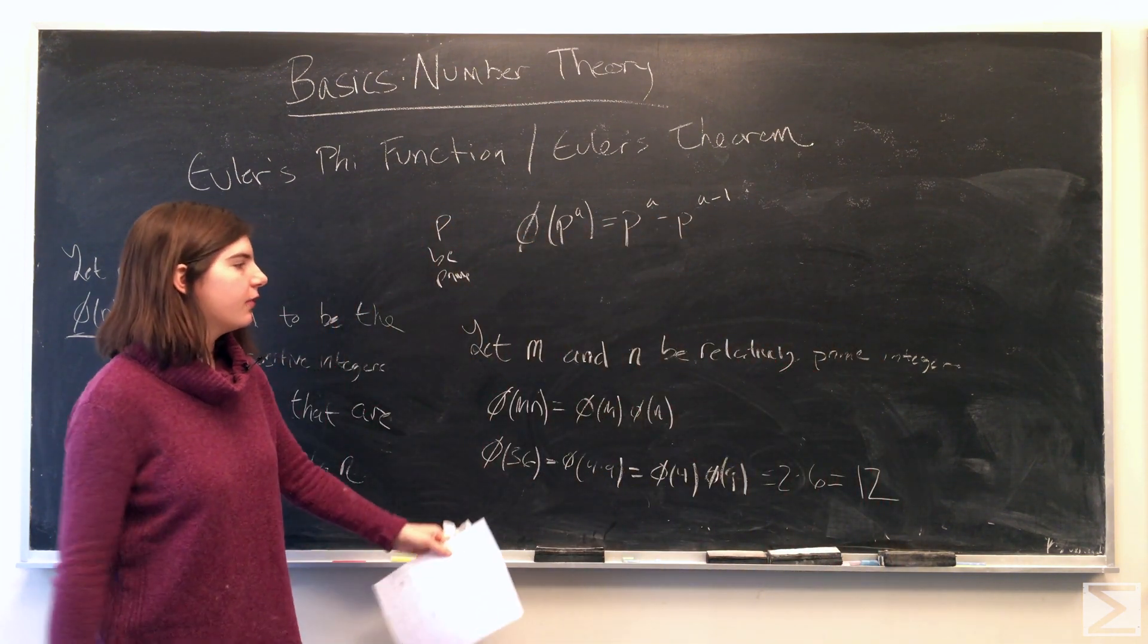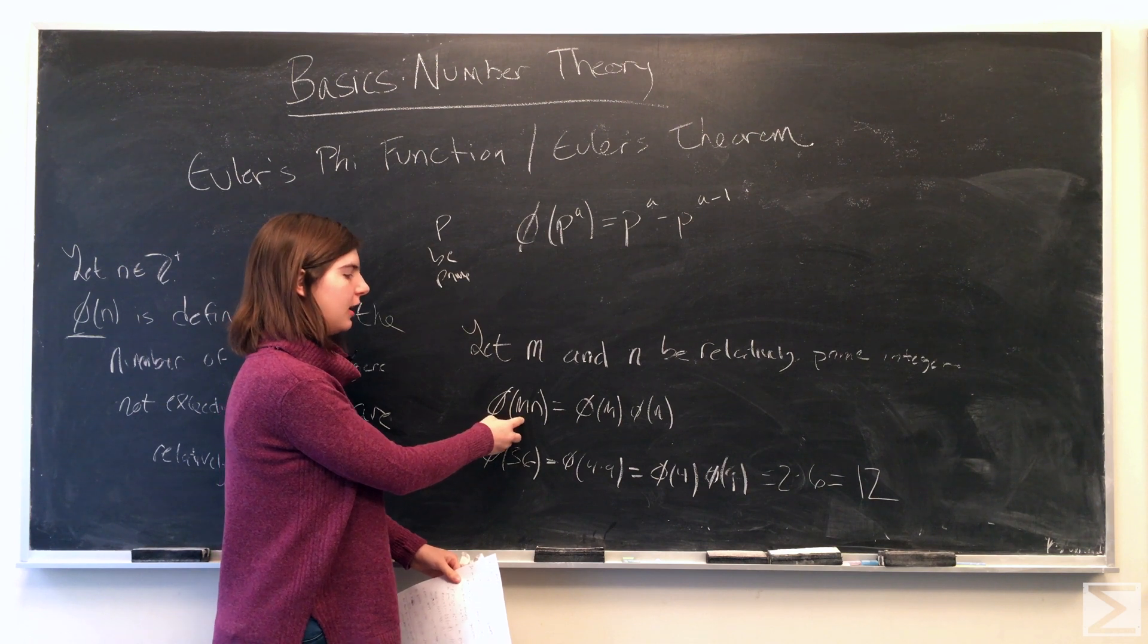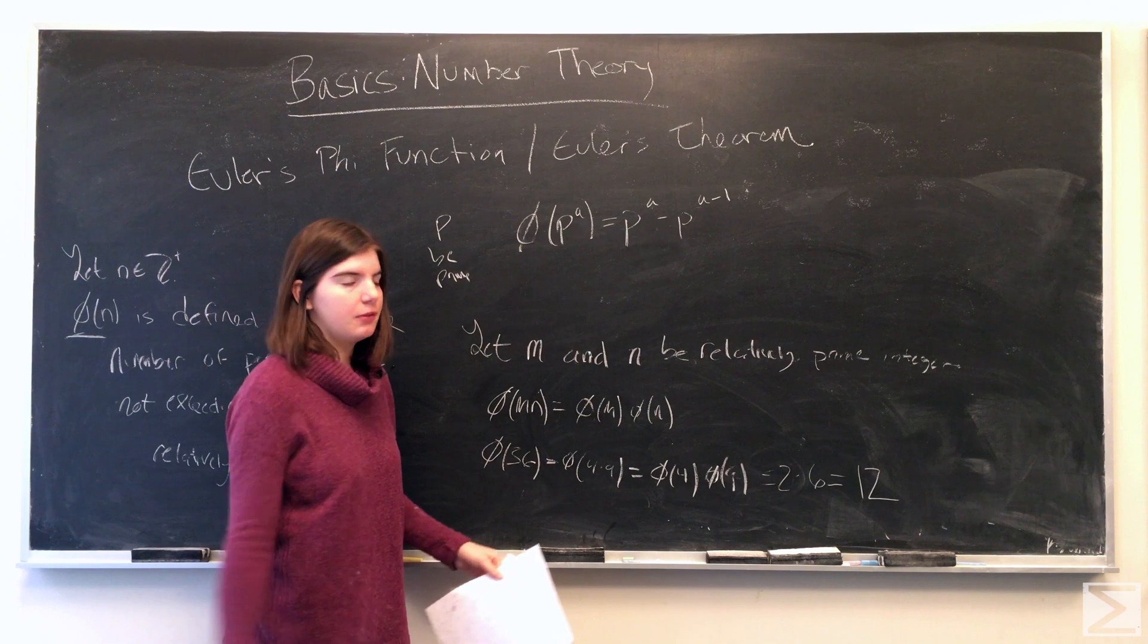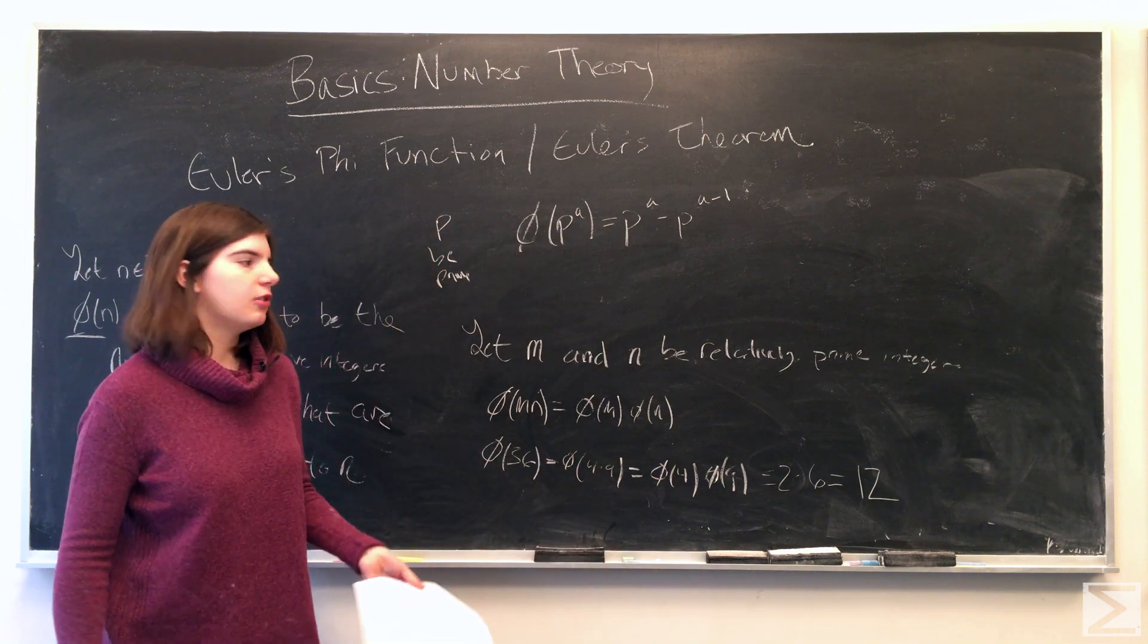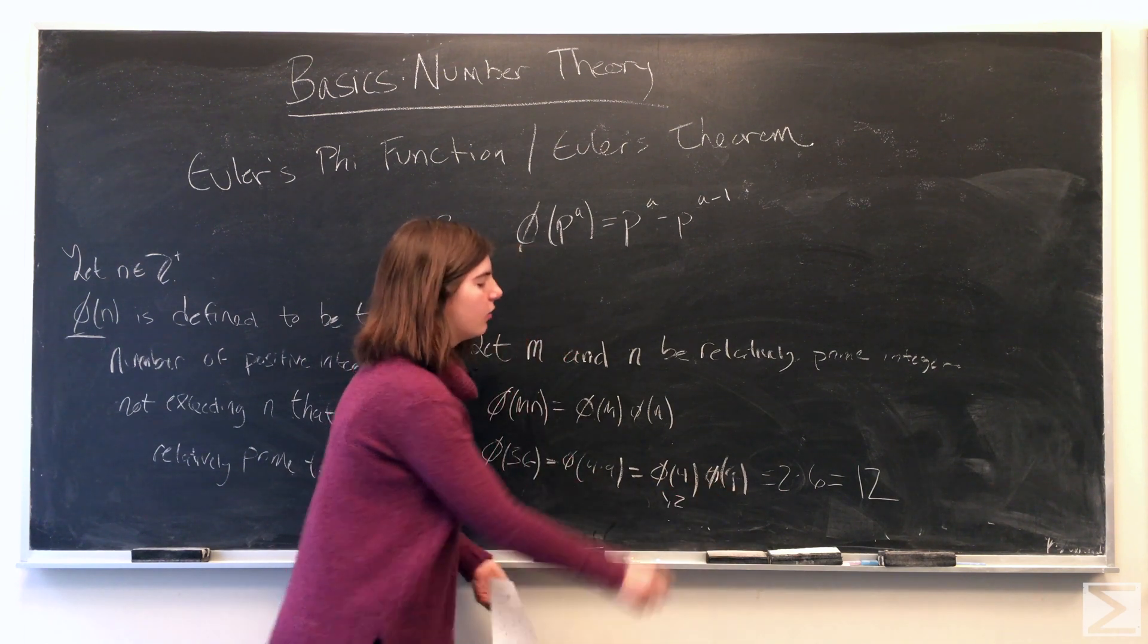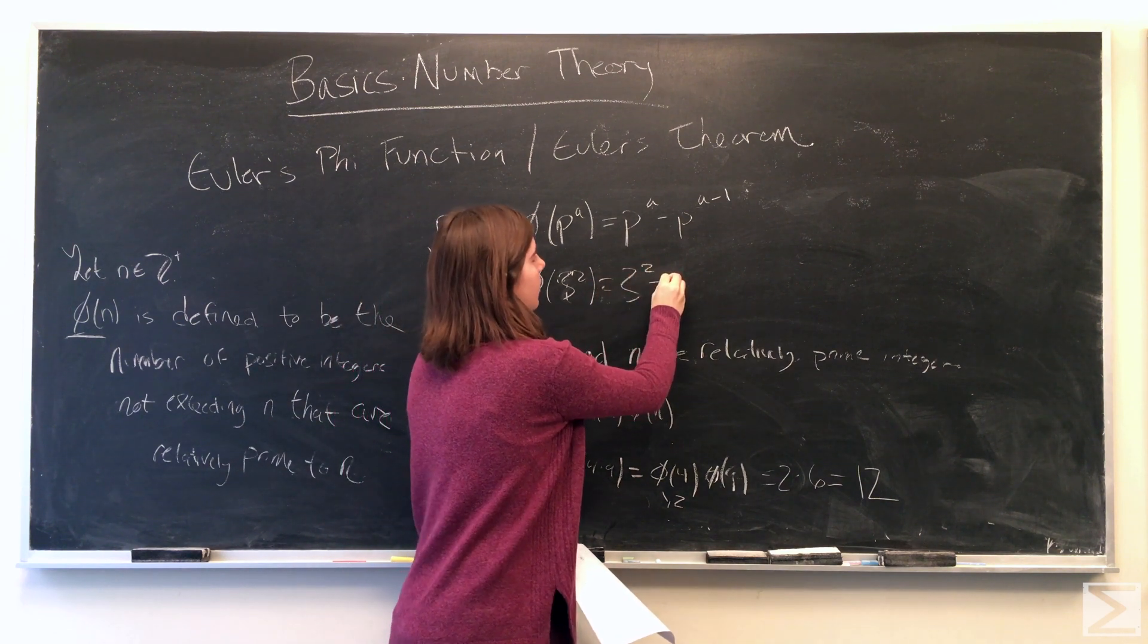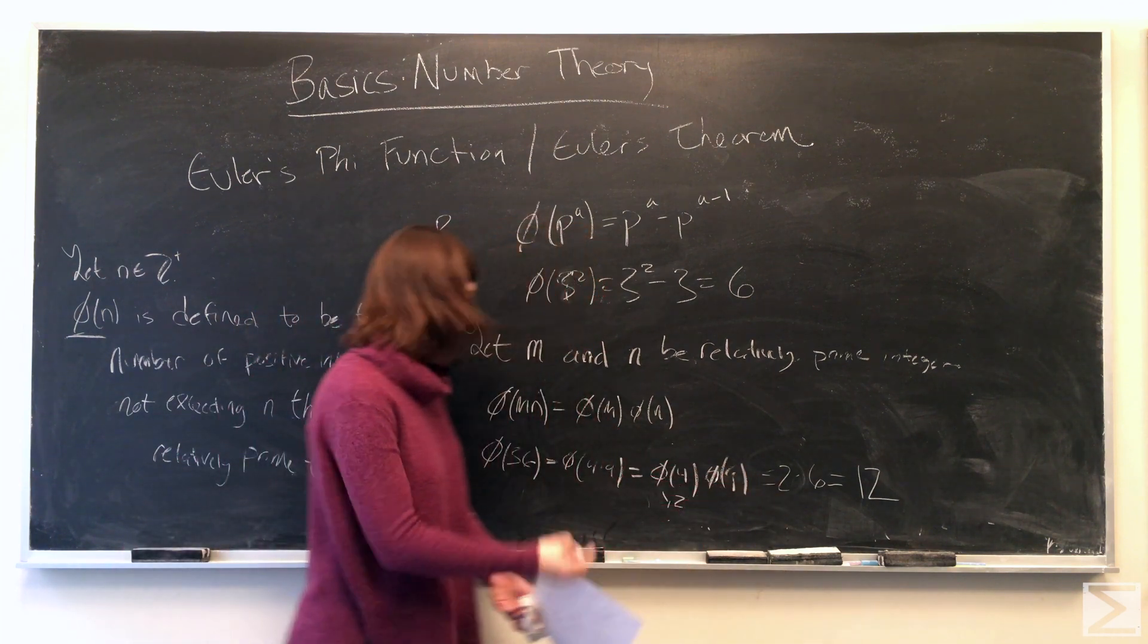Another method to calculate the phi of a function, so if we let m and n be relatively prime integers, then we have the phi of m times n can be broken up into the phi of m times the phi of n. For example, to find the phi of 36, 4 and 9 are relatively prime, so we can find the phi of 4 times the phi of 9. Those are pretty low numbers, so you can just count them, like 4 is 1 and 2. You can either count 9 or use the method we talked about above, so 9 is 3 squared. So it's 3 squared minus 3, which is 6. So you have 2 times 6, and the phi of 36 is 12.